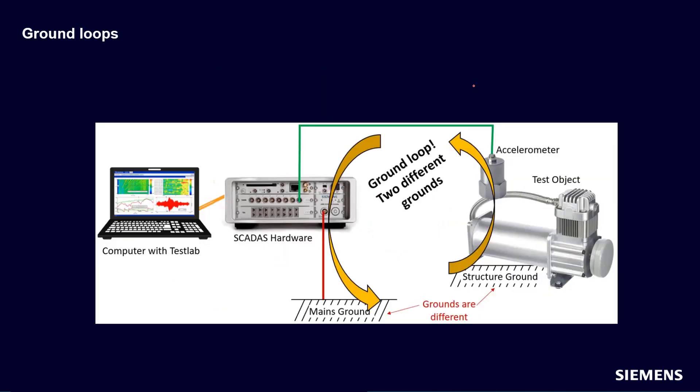Let's talk about what could cause that. So here I have my measurement system, a SCATUS, and notice a SCATUS is typically plugged into the wall, your mains, and it's grounded there. But then here we have an accelerometer attached to our test object. It's also going to ground, but it's a different ground than what's on the mains. It's what you would call the structure's ground, and they're two different things, and this can create a ground loop.